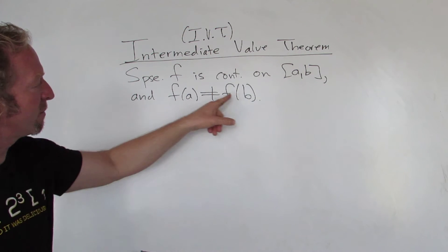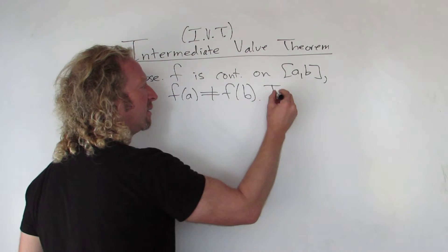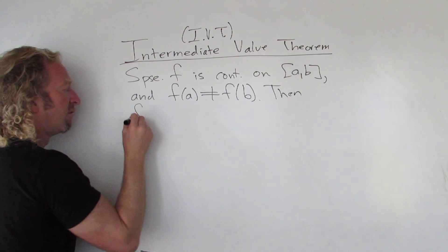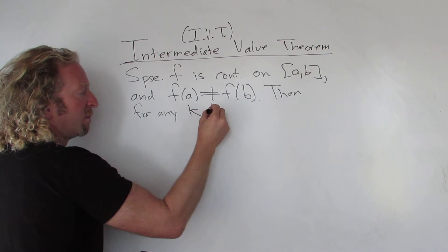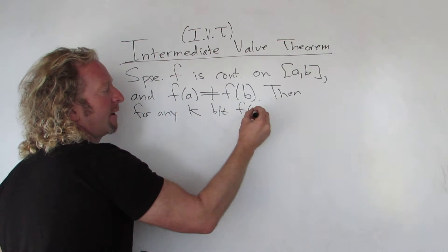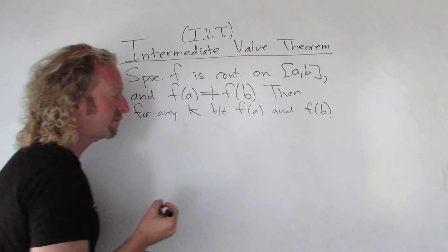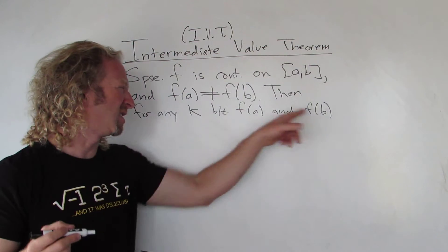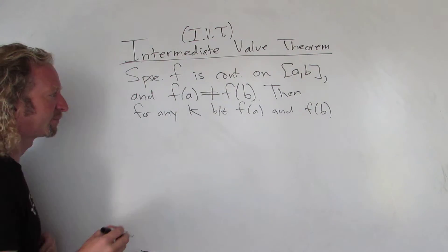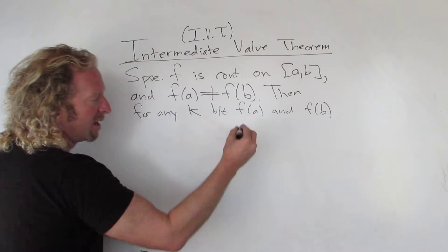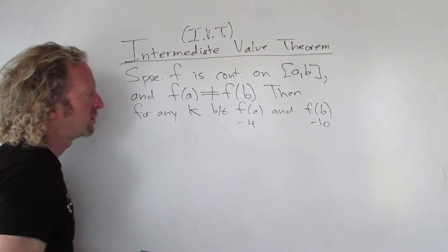Then for any number between these two, for any K between F(A) and F(B) - we can assume F(A) is less than F(B) or, you know, when we're talking about this - for any K between these numbers, it doesn't really matter. This could be negative 4, this could be negative 10, any number between those two.